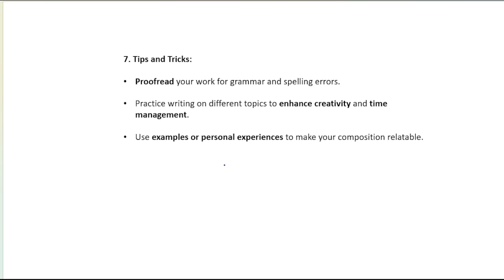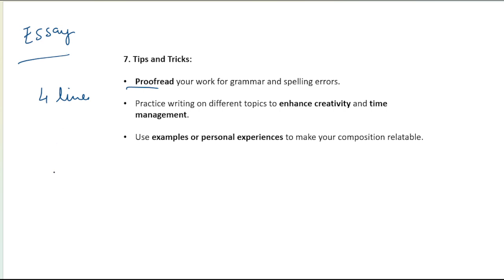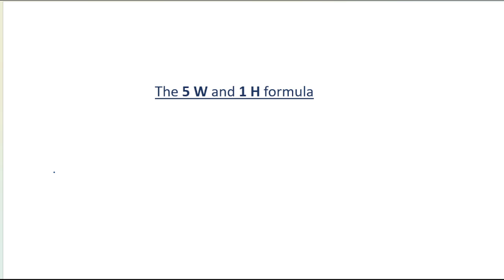Now some other tips and tricks. First, proofread — it doesn't mean you read all 350 words again, but check your grammar and spelling errors; correct one or two mistakes, as they matter. Practice writing on different topics to enhance creativity and time management. Buy books based on your examination, read essays per day, and write four lines by yourself — that will help you. Now I am going to tell you a formula that will help you with words and ideas in your composition.